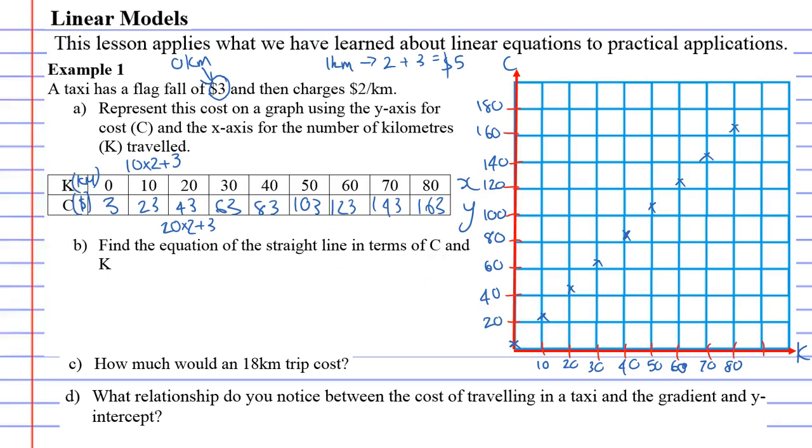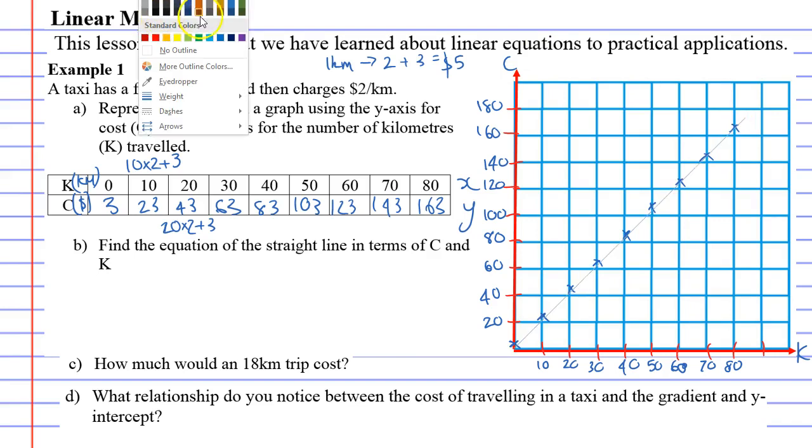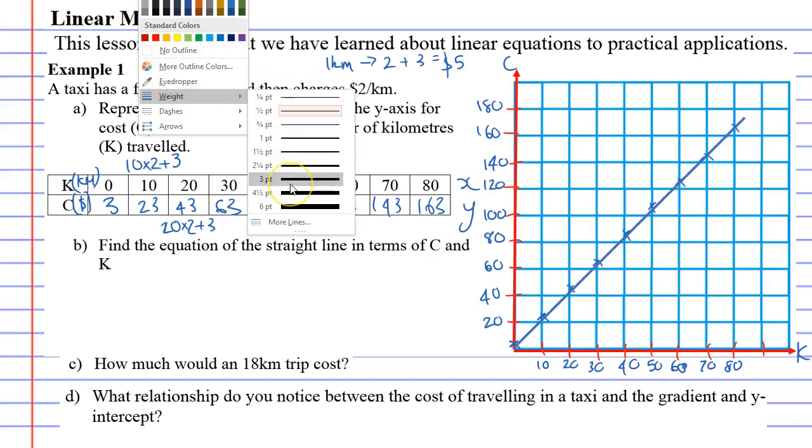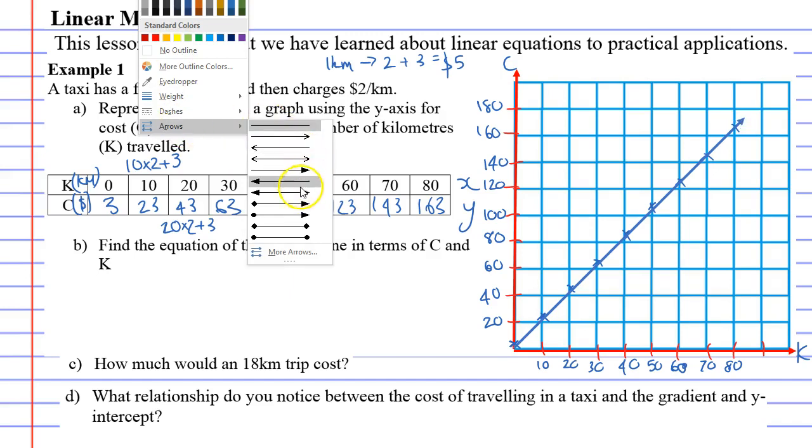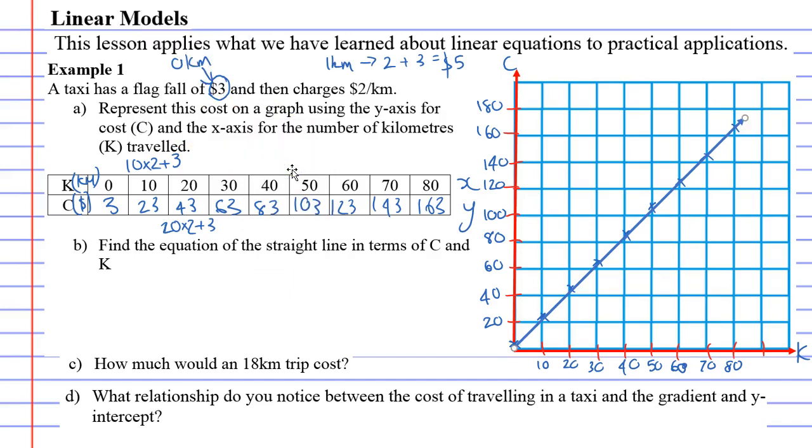We'll change the weight and put an arrow at the end. There we go. Let's get into our questions now. Question B has asked us to find the equation of this straight line in terms of C and K.